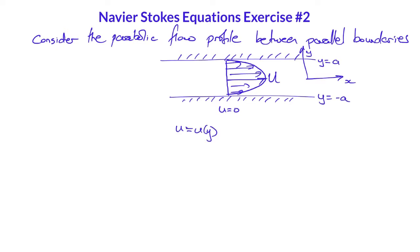If you simplify the Navier-Stokes equations for this situation where u is only a function of y and v and w are zero, such that u of y is capital U times one minus y squared over a squared, what is the x force balance equation of Navier-Stokes?